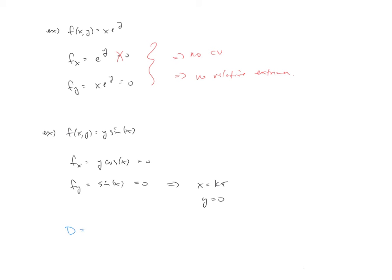So the D would be f sub x, x, so f sub x, x would be derivative of this, derivative of this with respect to x. So we're going to have a negative y sine x, and then times f sub y, y, derivative of this with respect to y, which would be 0, minus f sub xy, derivative of this with respect to y, which would be cosine x, and then squared.